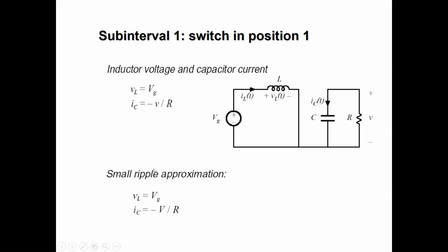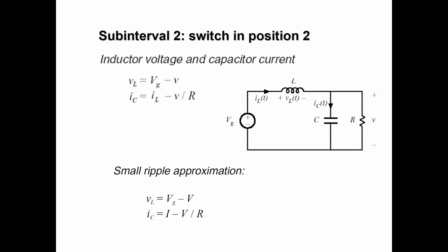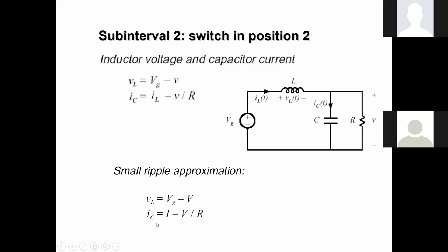After applying small ripple approximation, VL = Vg and IC = −V/R, with the output voltage becoming a smooth DC value with ripple eliminated. When the switch is connected at position two, the inductor voltage is VL = Vg − V, where V is the output voltage. The capacitor current becomes IC = IL − V/R. After applying small ripple approximation, VL ≈ Vg − V and IC = I − V/R.